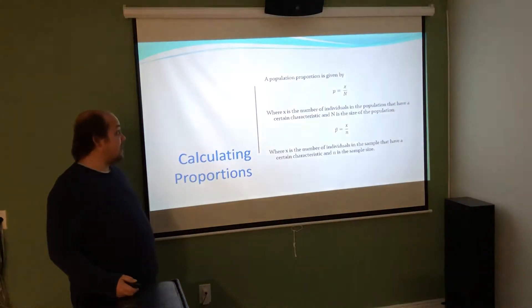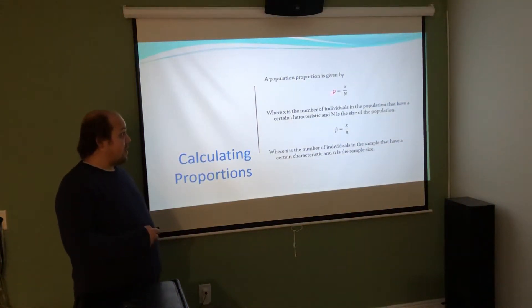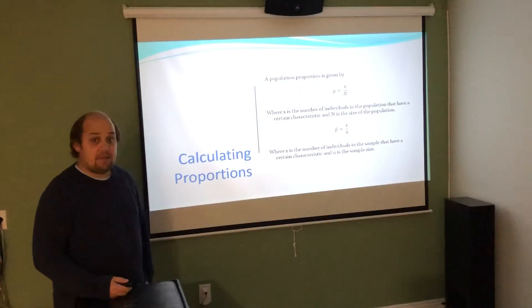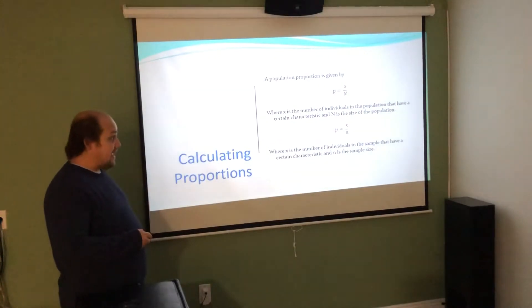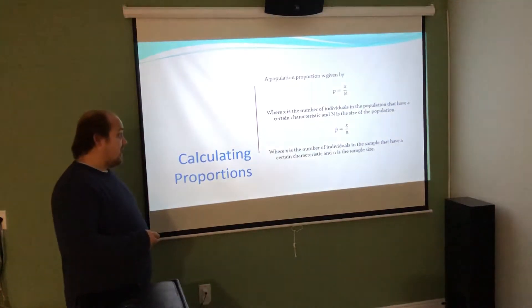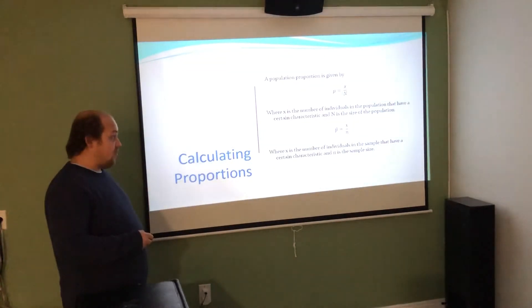Any proportion in a population is given by p, that proportion equals x, the number of people who have the characteristic, over capital N, the number of people in the population. If I want to find an estimate of that, p hat, equals x, the number who have the trait, over n, the number in the sample.